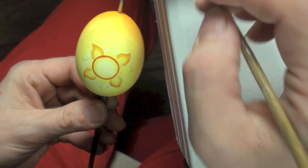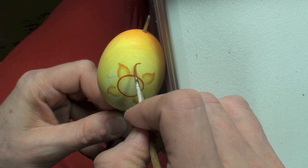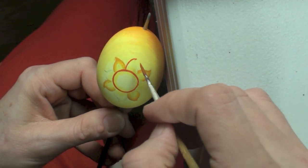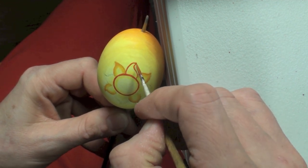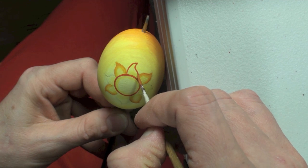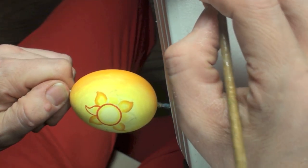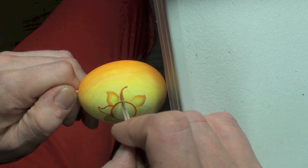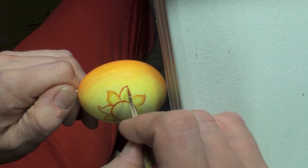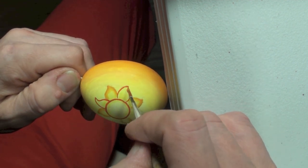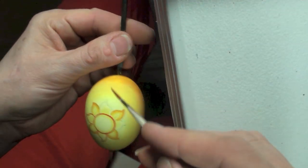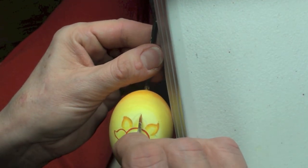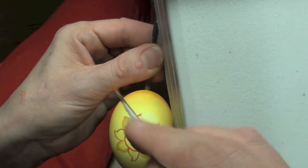Once we're done with the center, we want to take the same brush and the same color and just outline the second set of rays on the sun.